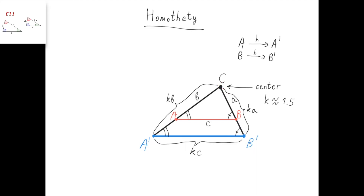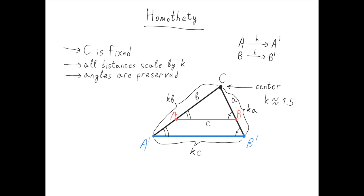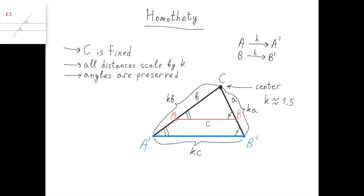Also, homothety preserves angles. In this case, we have that this angle equals this angle, and this angle equals this angle. Essentially, we're saying that this triangle is similar to this triangle. To recap: in a homothety, the center of the homothety remains fixed, all distances scale by a factor of k, and all angles are preserved.